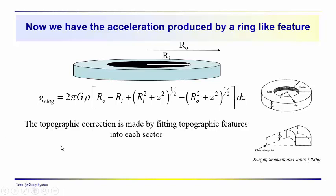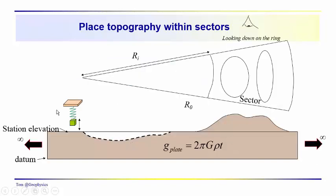So again, the topographic correction is, or the topographic effect, depending on, right now we've been concentrating on effects. That's made by fitting the topographic features into each sector. So it would be something like this. Here's our topographic feature. I've moved the station over here. We've got a mountain. We've got some hills out here at a distance from our observation point. We center the ring at our observation point. We have a sector which sits over this topographic feature,